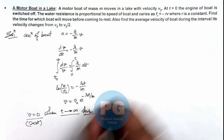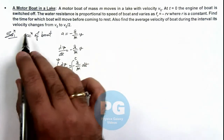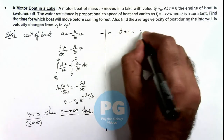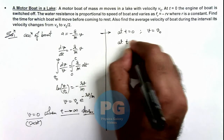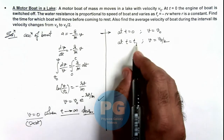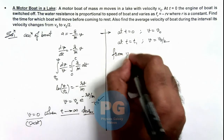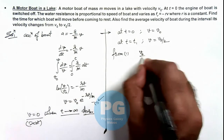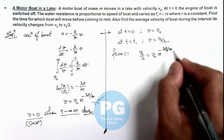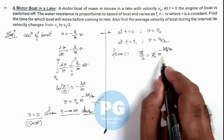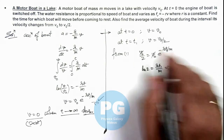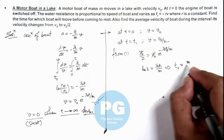For the second part, we are required to find the average velocity of the boat during the interval its velocity changes from v₀ to v₀/2. At t = 0, the speed was v₀, and at t = t₁ the speed changes to v₀/2. Substituting into our expression: v₀/2 = v₀ × e^(-rt₁/m). The v₀ cancels, giving ln2 = rt₁/m, so t₁ = (m/r)ln2.